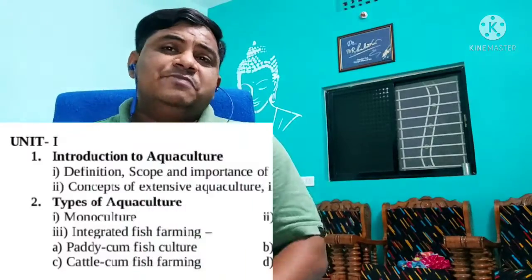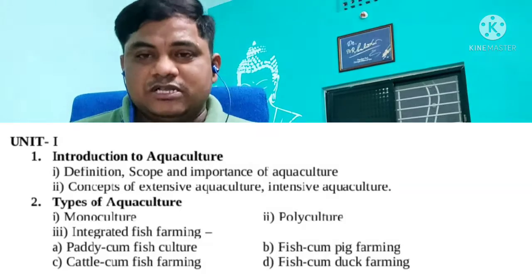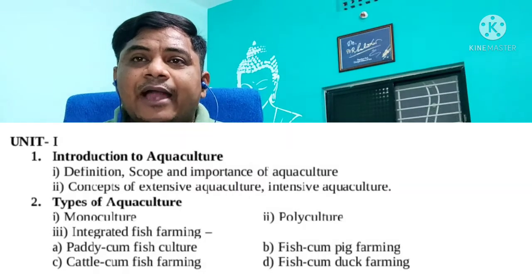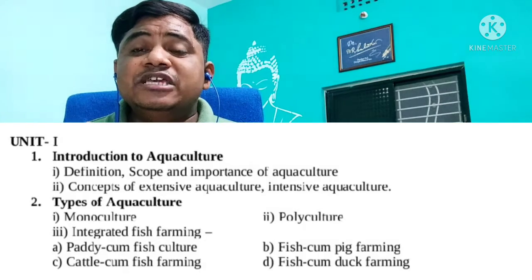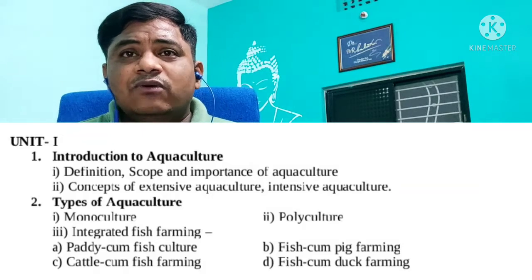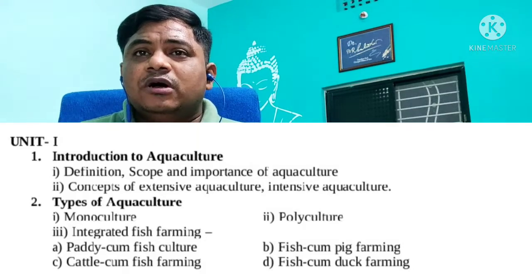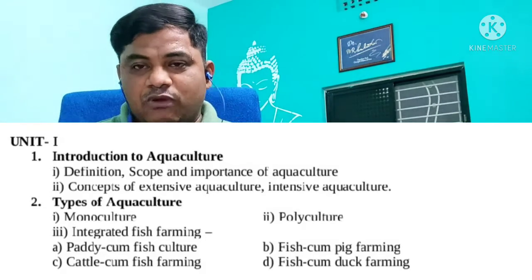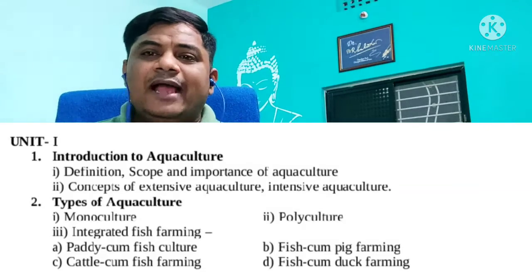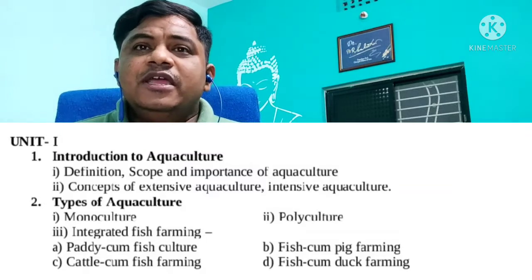This paper contains four different units, each with a number of sub-segments. Unit One starts with an introduction to aquaculture — the definition of aquaculture, followed by the scope and importance of aquaculture. After that, we discuss the concepts in aquaculture, including extensive aquaculture and intensive aquaculture. These two concepts are studied in detail as part of Unit One.